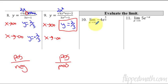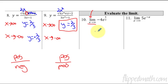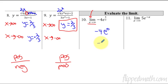Now let's do the limit problems. Remember, the limit as x approaches infinity is exactly the same as asking what's the end behavior or what's the horizontal asymptote — they all mean the same thing. So for this one, we have −4e raised to 1/x. As x approaches infinity, 1 over infinity is basically 0. So e to the 0 is 1, and negative 4 times 1 is just negative 4.